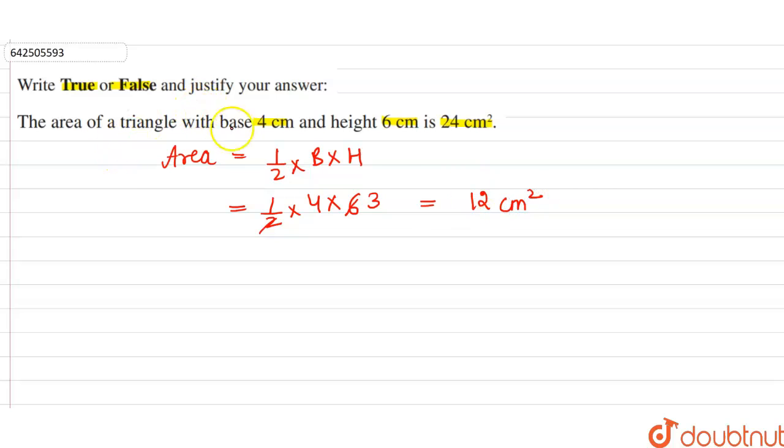So the area when base is 4 cm and height is 6 cm is equal to 12 cm square, and it is given that the area is 24 cm square. So we can say that the above statement is false.